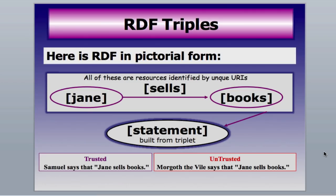Here's how the RDF triplet looks in pictorial form. You can see that resources Jane and books are tied with the verb sells to make a statement. Remember the trust layer at the top of our layers — if we have the statement 'Jane sells books' from someone we know well like Sam, we're going to trust it a lot more than from someone named Morgoth the Vile. There's a trust factor, and we need to find a way for computers to know they can trust the sources.